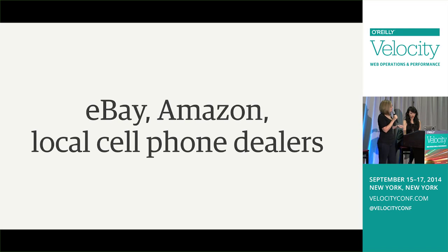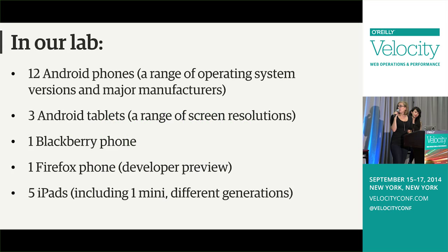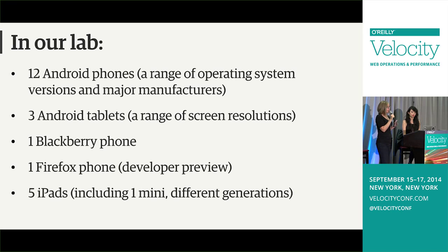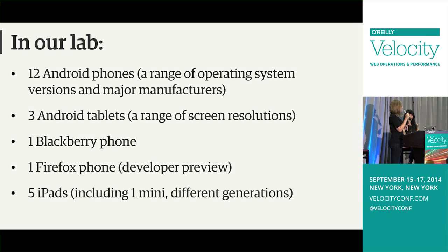We buy our devices off of eBay, Amazon, and other local cell phone dealers. We'll also buy refurbished from the Apple Store. What do we have in our lab? We've got 12 Android phones. This is really important for our lab because most of our engineers are iOS-based — their personal devices are iOS — and they're funny when they walk up to the lab and see these Android devices and ask, 'How do I take a screenshot on this?' We have a lot of Android phones with a range of operating systems and different manufacturers to cover the spectrum.